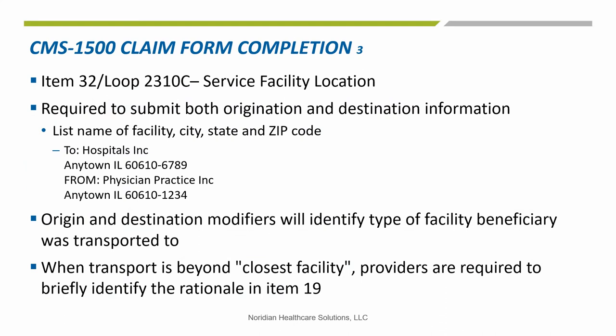This slide addresses the CMS 1500 instructions for item 32. The originating site information must be entered in item 32. Ambulance suppliers are required to submit both origination and destination information. It is recommended to have the facility name, city, state, and zip code — the street address is not required. If there is not enough space for destination information in item 32, providers must enter this information in item 19. The origin and destination modifiers will identify the type of facility the beneficiary was transported to. When the transport is beyond the closest facility, suppliers are required to briefly identify why, and that information is also placed in item 19.